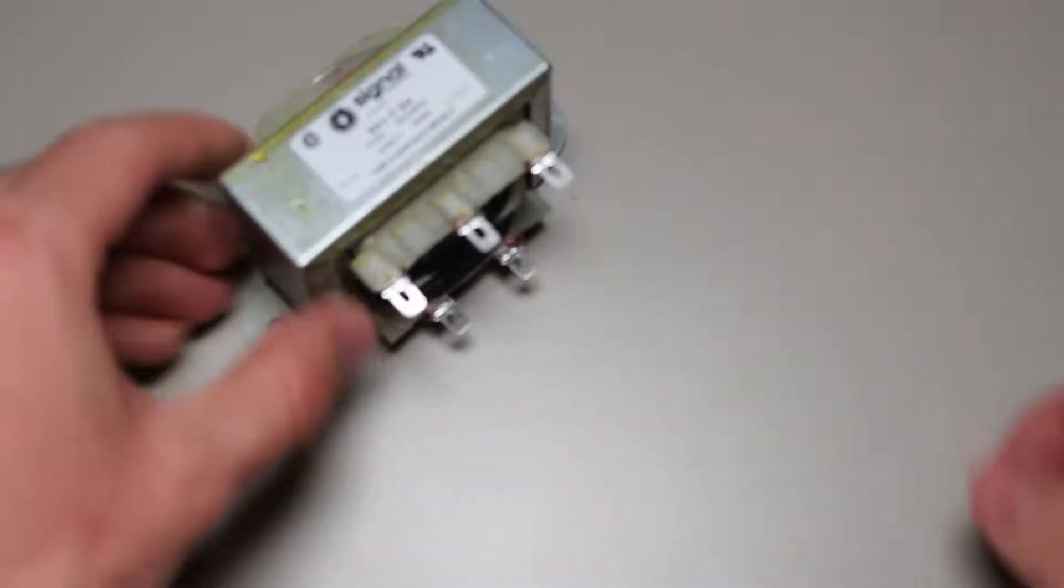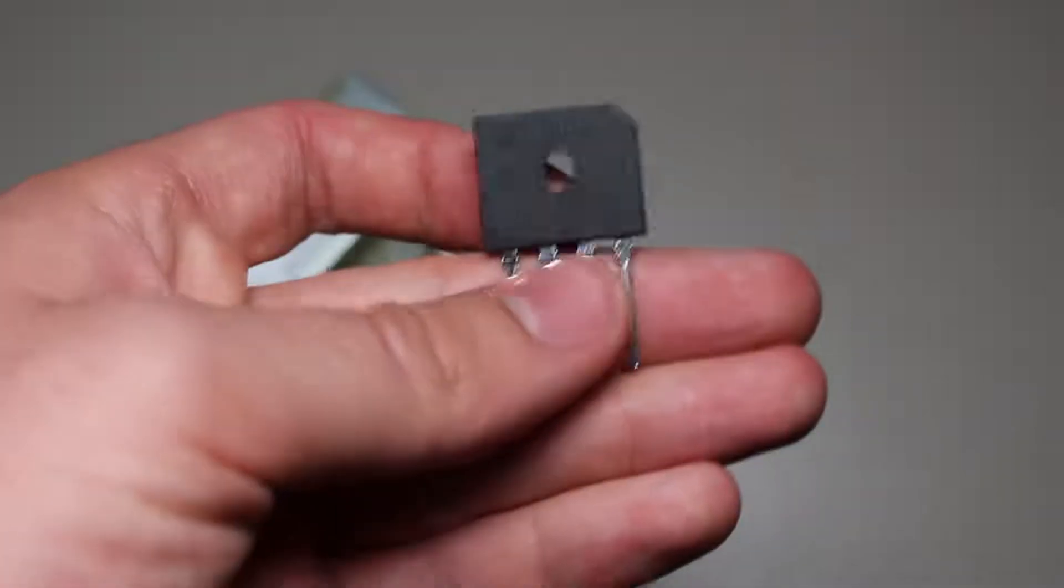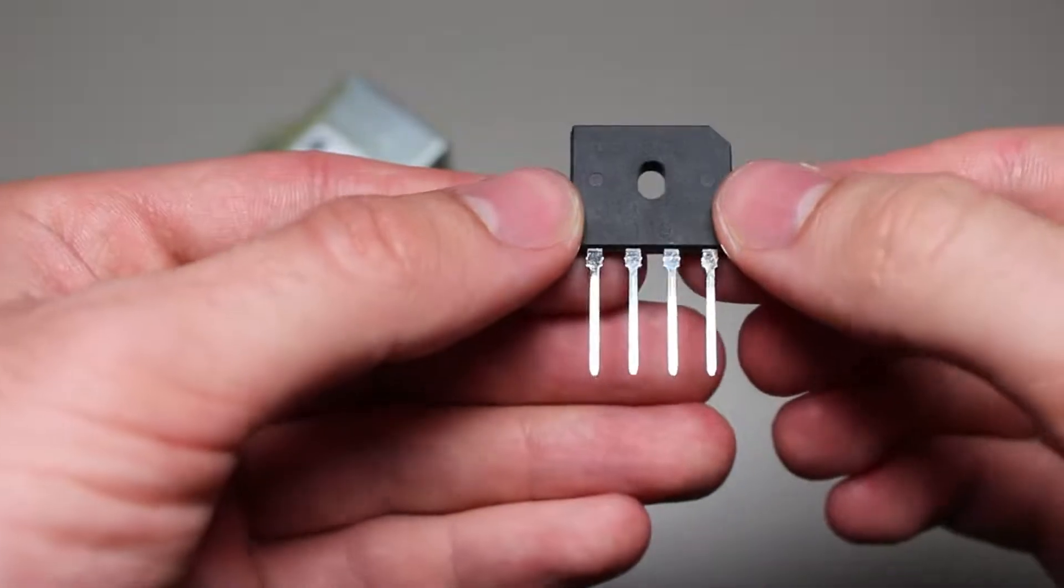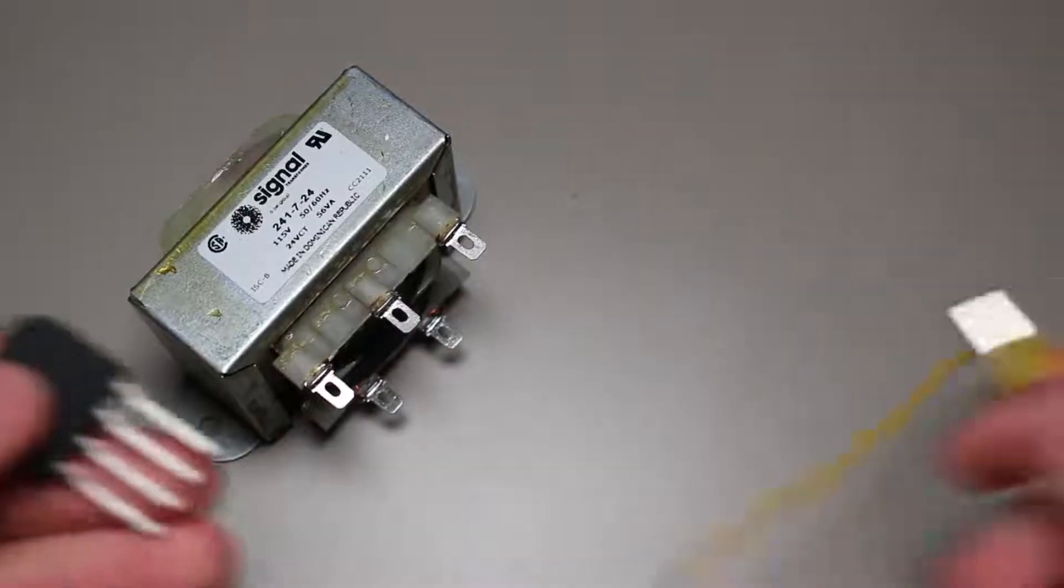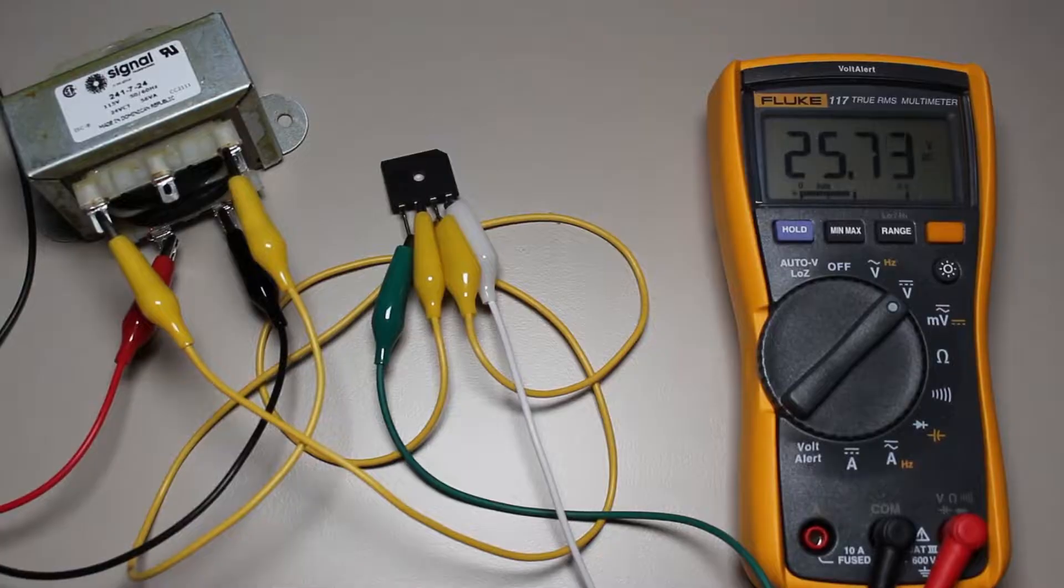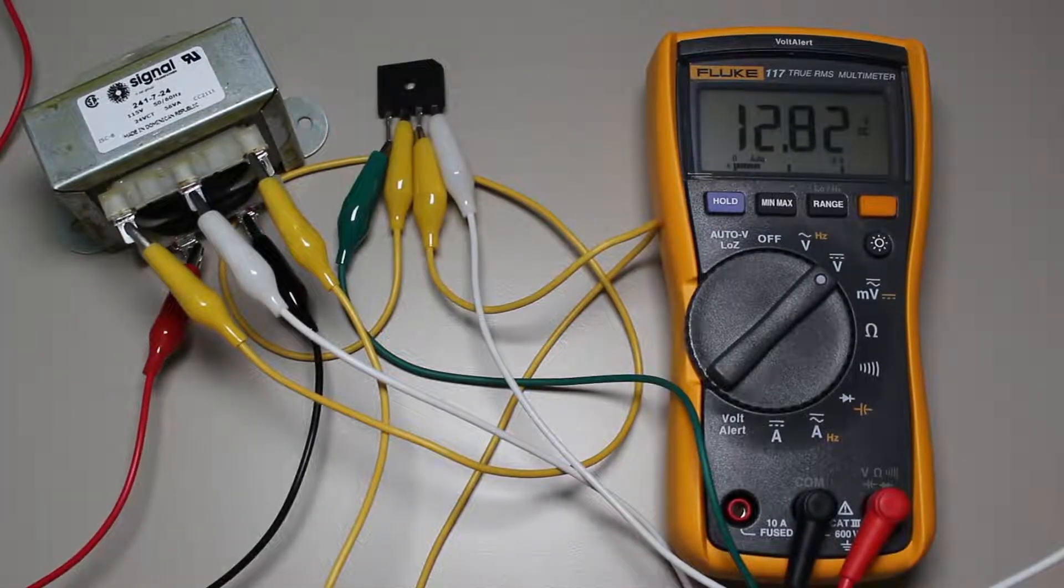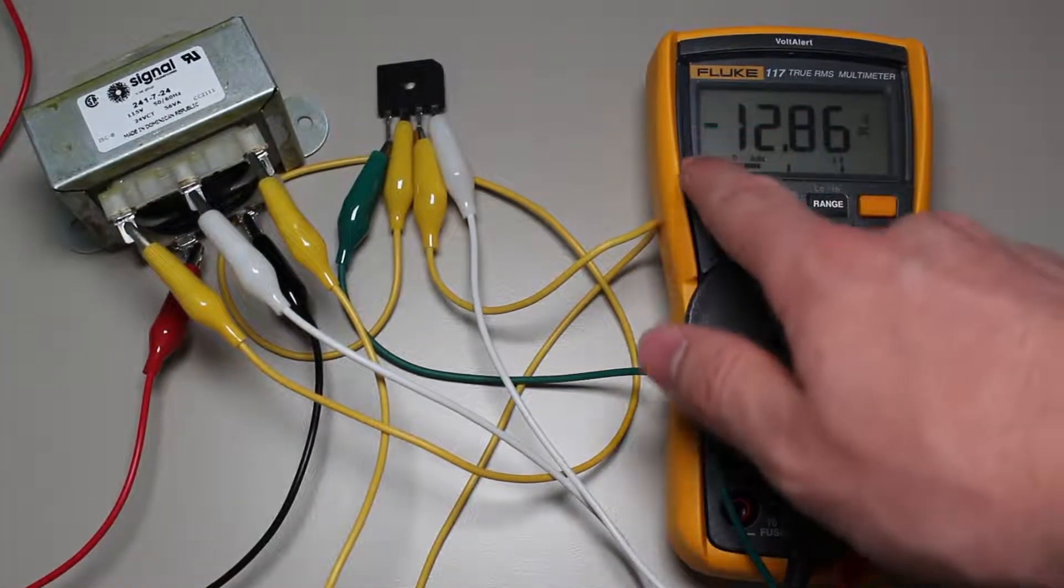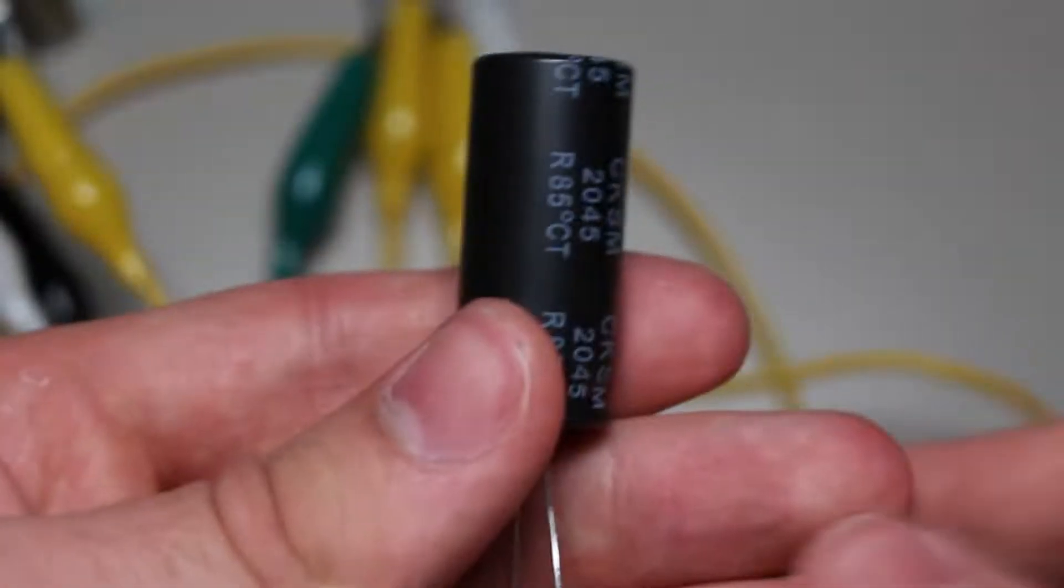we can use a center tapped transformer. Ignoring the center pin for a second, we can connect the transformer to our rectifier which will give us a DC voltage. The center tap pin is our ground and therefore we will split our full voltage into two halves, one positive and one negative. After adding two capacitors, we have our smoothed out rails.